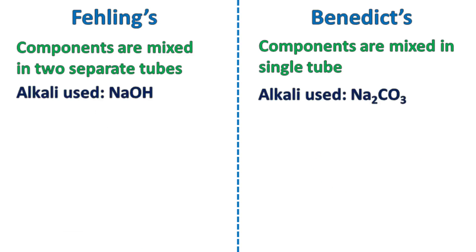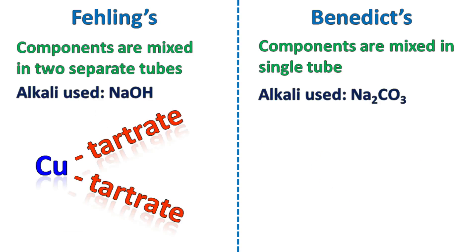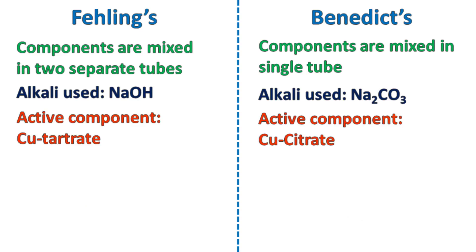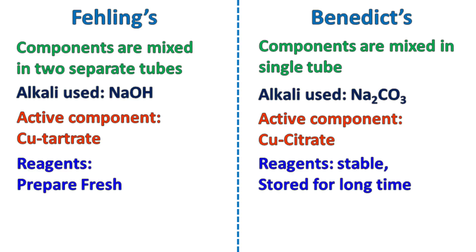The active component in Fehling's test is a copper tartrate complex, while the active component in Benedict's test is a copper citrate complex. The copper tartrate complex is less stable, while the copper citrate complex is highly stable. Because of this reason, Fehling's reagents must be prepared fresh, while Benedict's reagents are stable and can be stored for a long time.